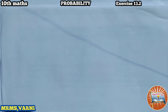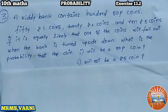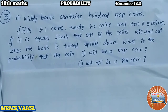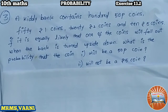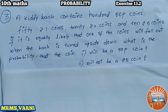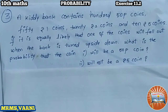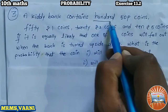Hello everyone, this is Mahendra. In this video we are going to solve exercise 13.2, problem number three. The question is: a bank contains 150 paisa coins, 50 one-rupee coins, 20 two-rupee coins, and 10 five-rupee coins. If it is equally likely that one coin will fall out when the bank is turned upside down, what is the probability that the coin will be a 50 paisa coin, and second, will not be a five-rupee coin?